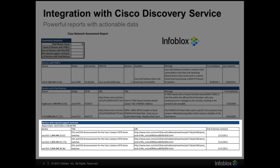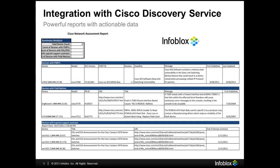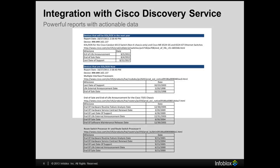Also, out of support contracts can be dangerous, so this report has immediate value by showing any Cisco device with an expired support contract and when they did expire. In addition, the report also includes reviews for end of life and end of support status for the Cisco devices.